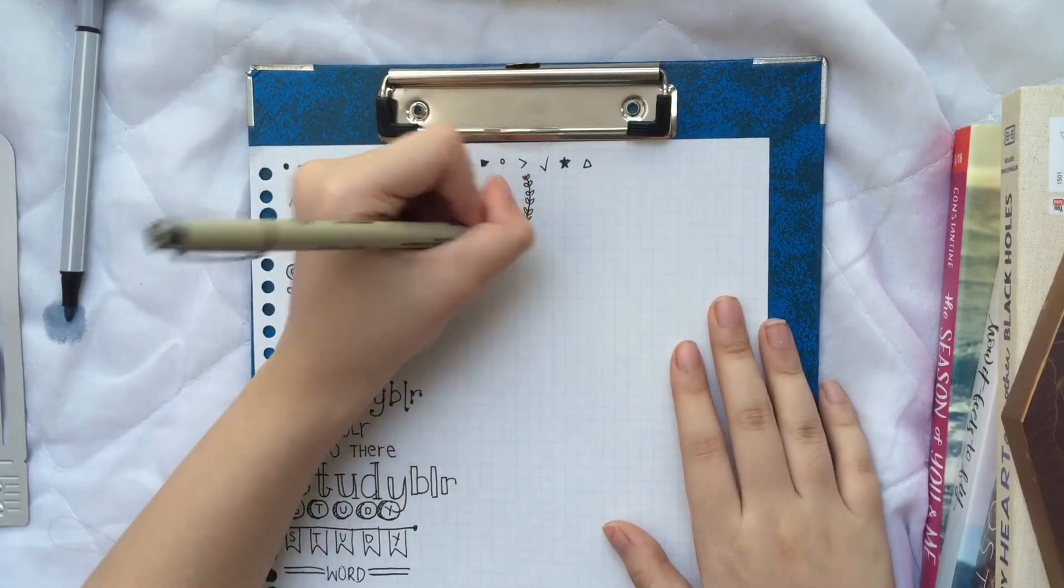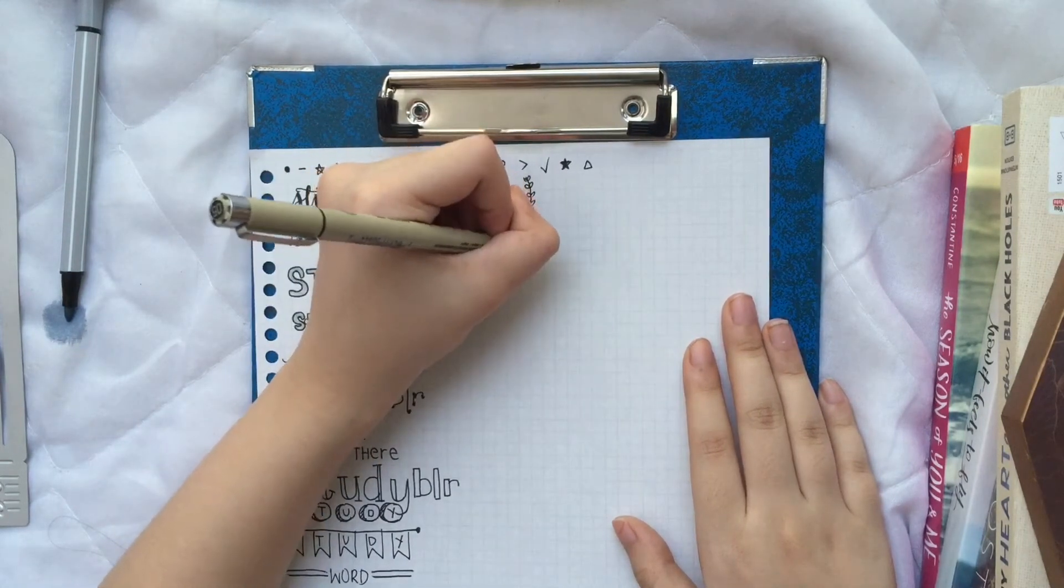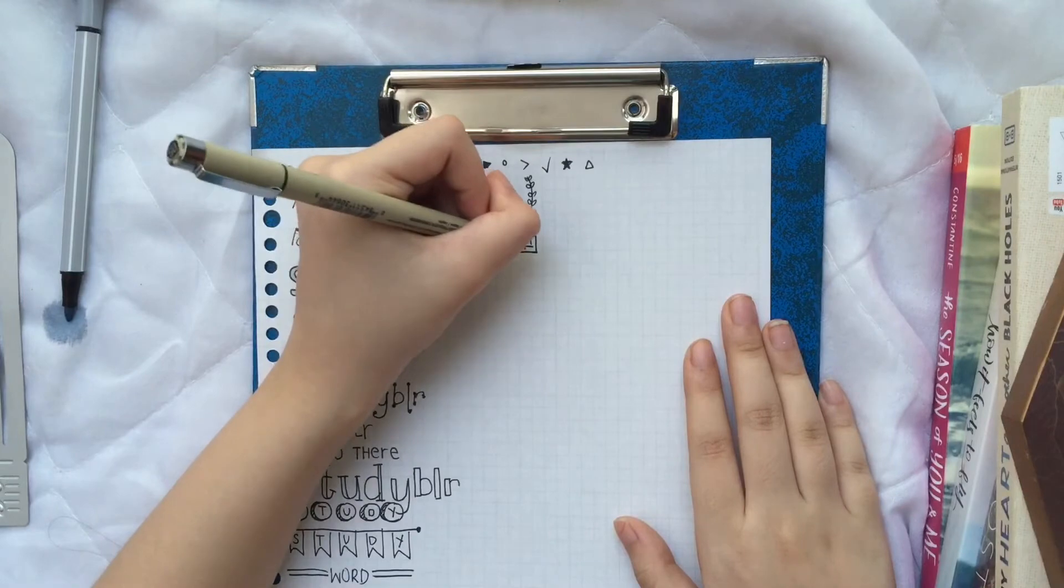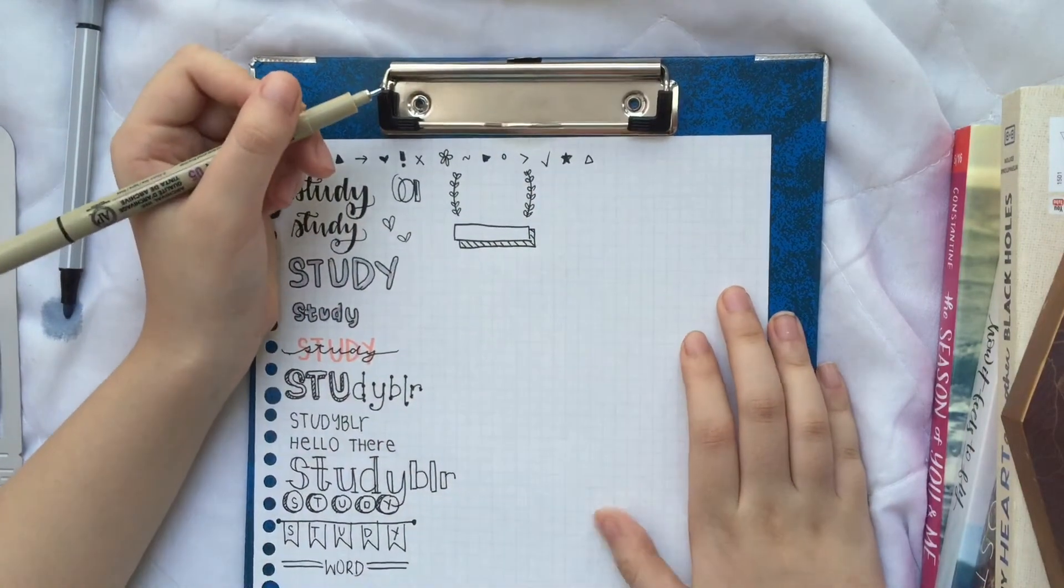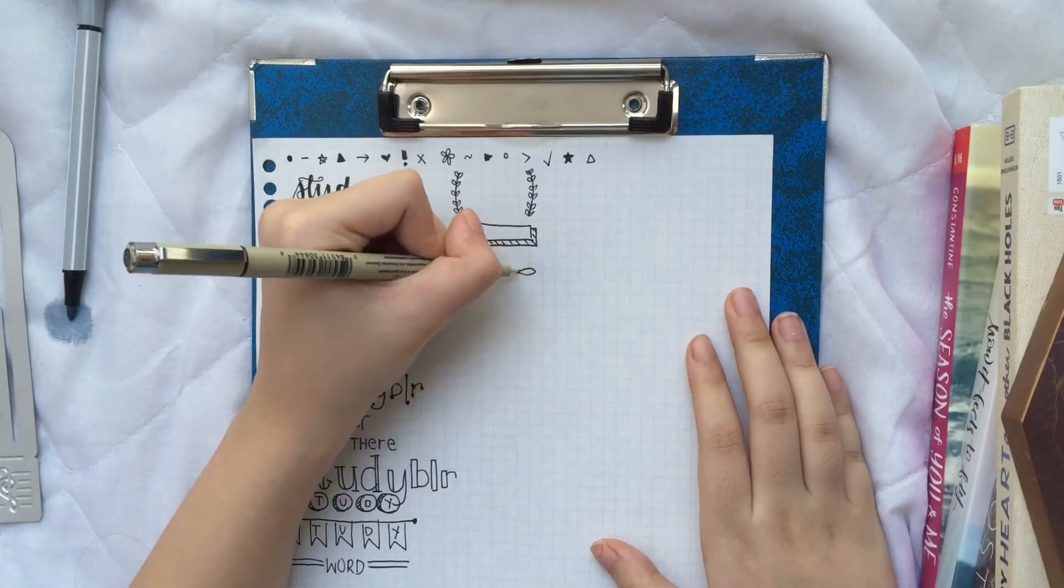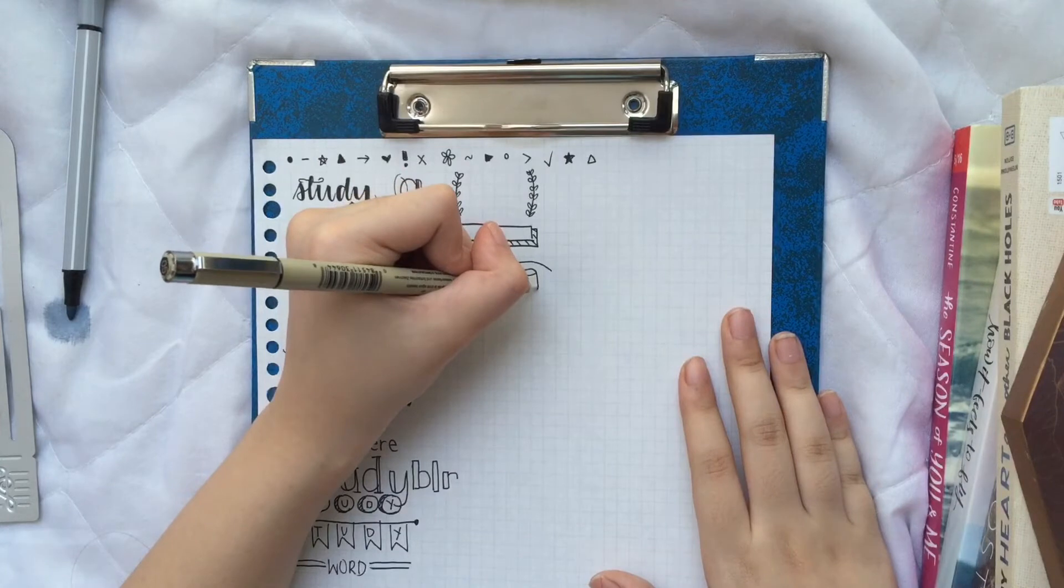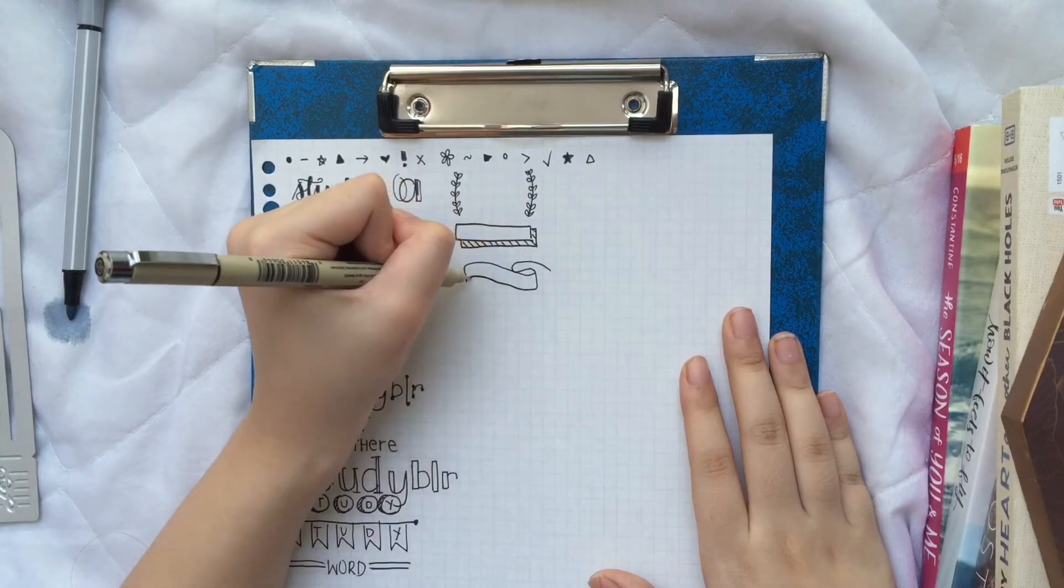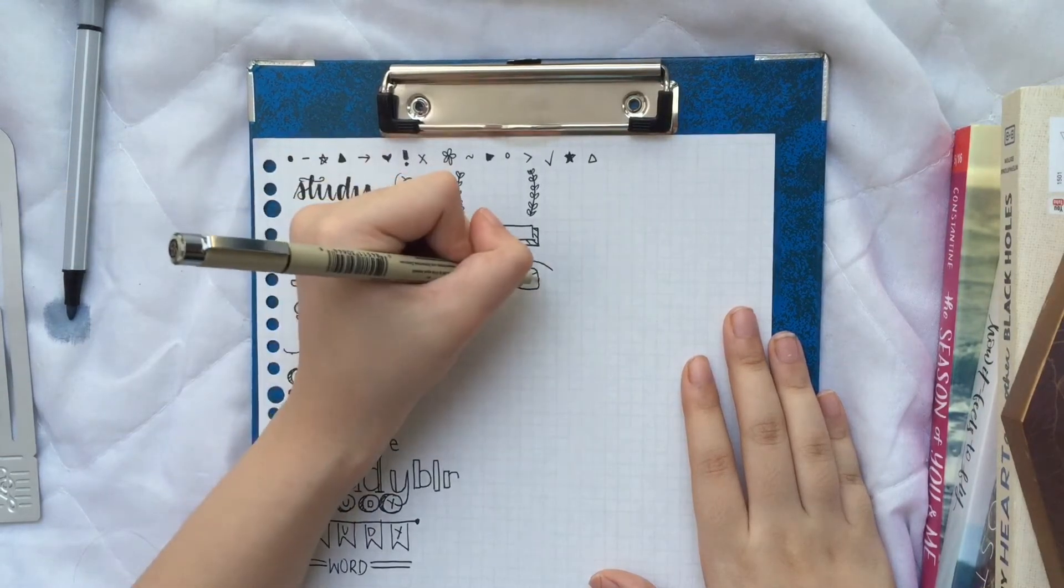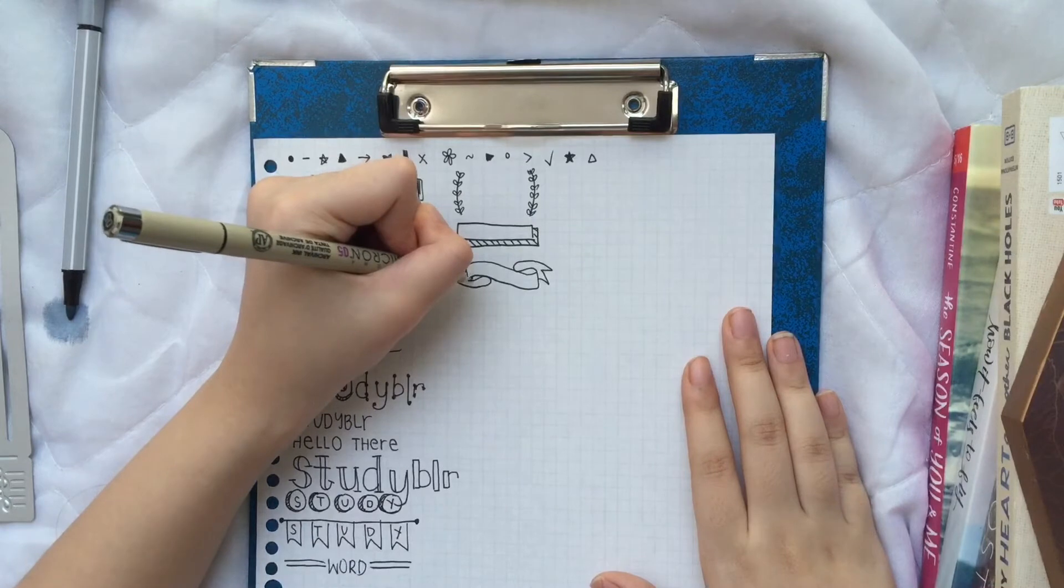And then I also use this kind of banner. As you can see, I really love doing this shadow thing. And then there's also this one, and then you're going to want to shade this one in.